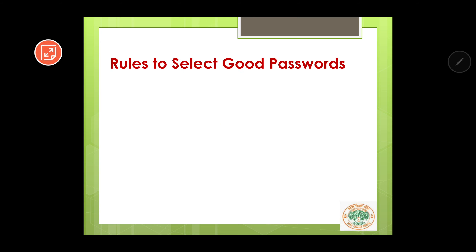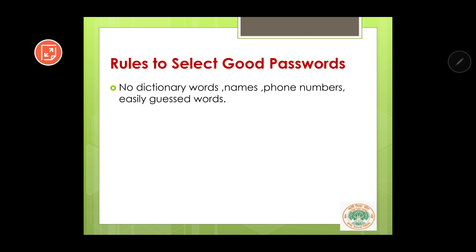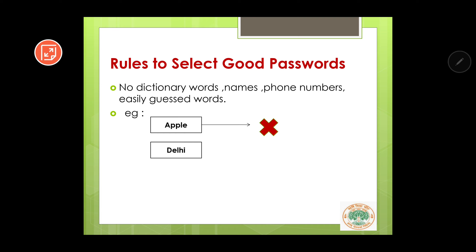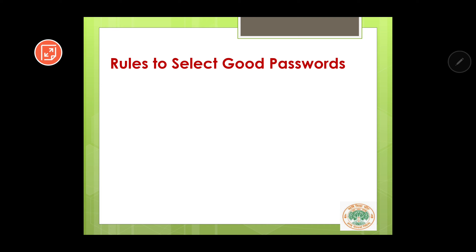There are certain rules which should be followed for selecting good passwords. The first rule is: no dictionary words, names, phone numbers, or easily guessed words should be used. Otherwise you will be a victim of password guessing. Examples of passwords that should not be used include: 'apple' (a dictionary word), 'daily' (a common word), and '12345' (a very common password).